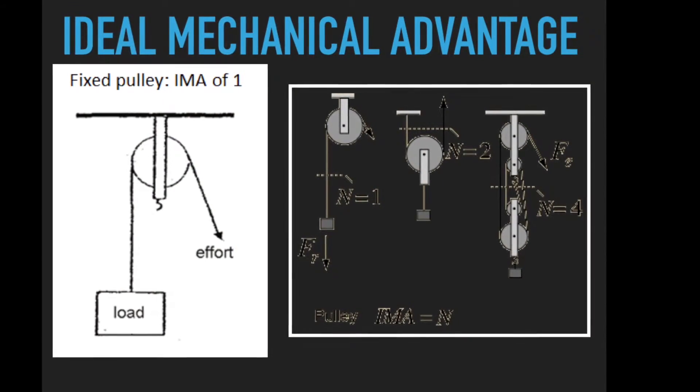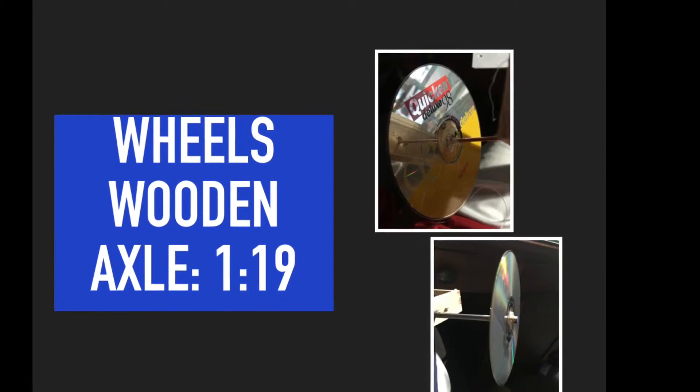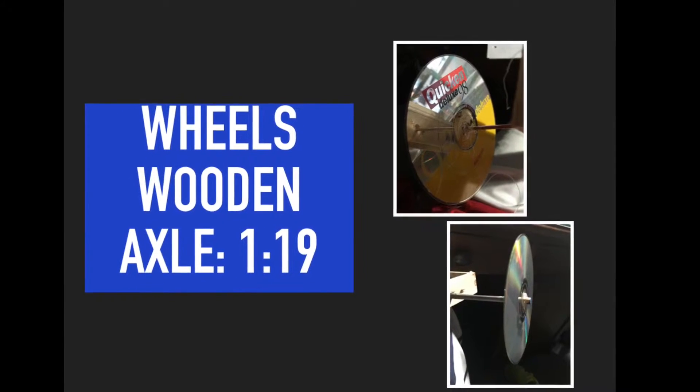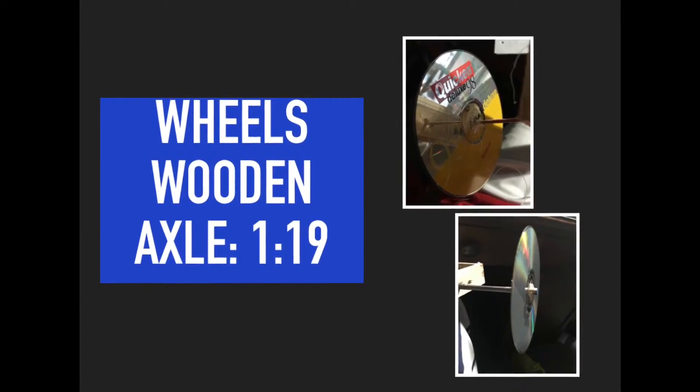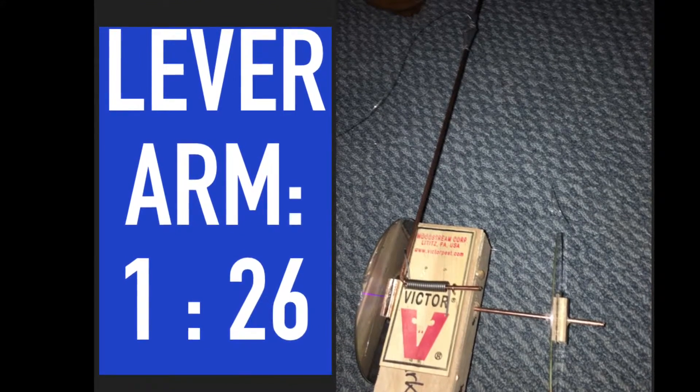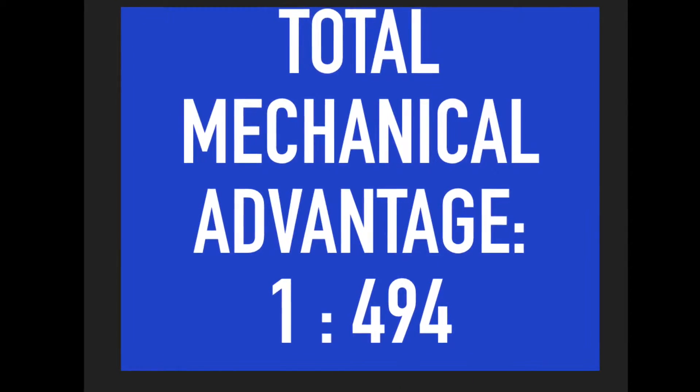Before testing my car, I calculated the mechanical advantage. To find the total mechanical advantage, I had to find the mechanical advantage of the lever arm and then the driver wheel. The mechanical advantage of the driver wheel was 1 to 19 and the lever arm's mechanical advantage was 1 to 26. I multiplied these together and the mechanical advantage of my car was 1 to 494.